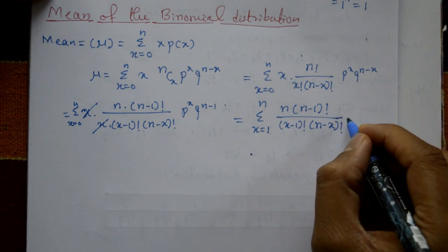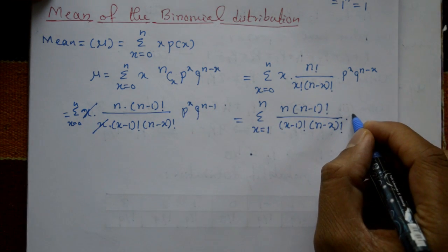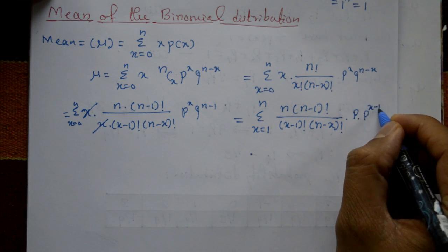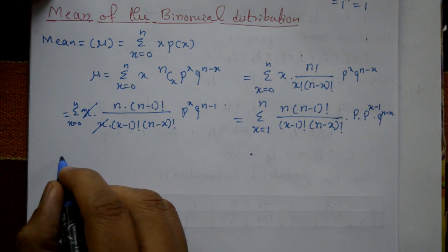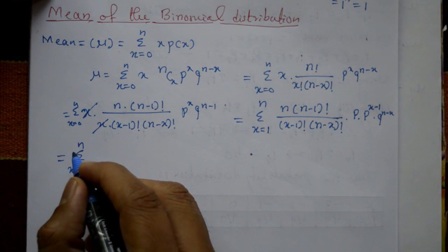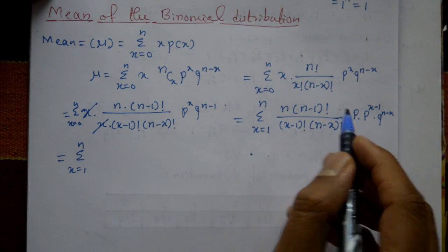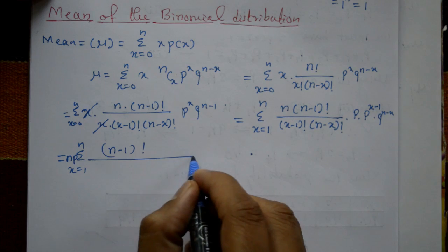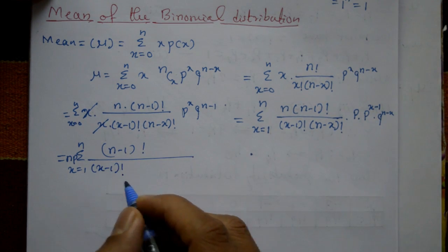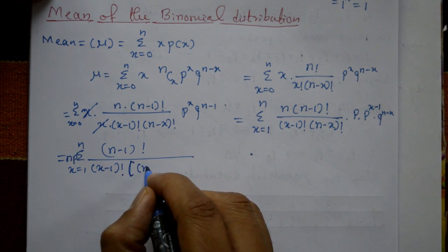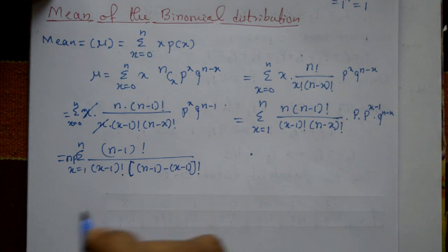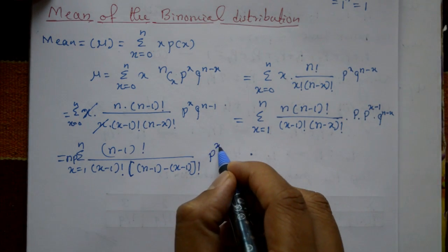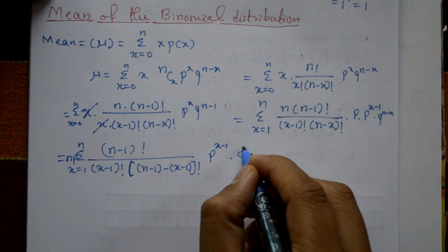Now multiply and divide by p: p shifts to numerator giving p raised to x minus 1, and q raised to n minus x. Taking n and p outside the summation, inside we have n minus 1 factorial divided by x minus 1 factorial into n minus x factorial, with p raised to x minus 1 and q raised to n minus 1 minus of x minus 1.